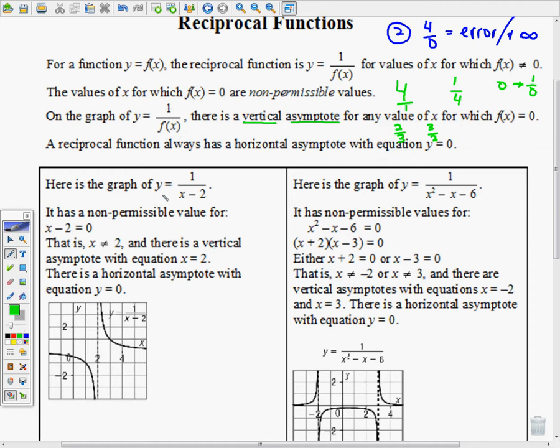Here's a graph of y = 1/(x-2). My original f(x) would have been x-2, and then the reciprocal is 1 over that. The non-permissible value you find by saying when is x-2 = 0? If you solve that, the answer is 2. Therefore, x cannot equal 2, or the non-permissible value is x = 2. There will be a vertical asymptote with equation x = 2.